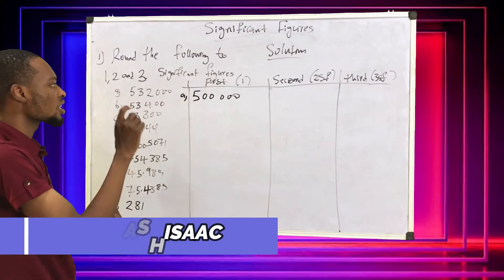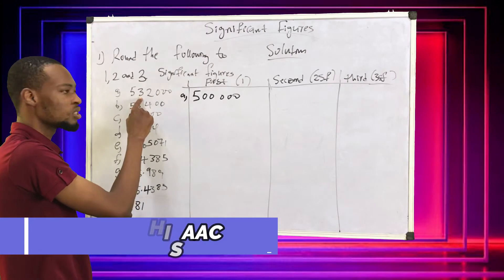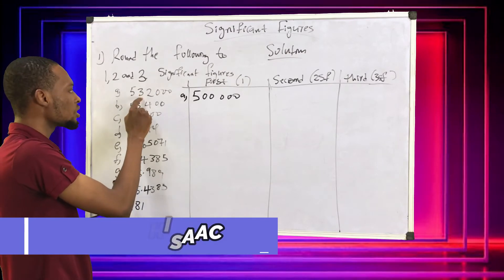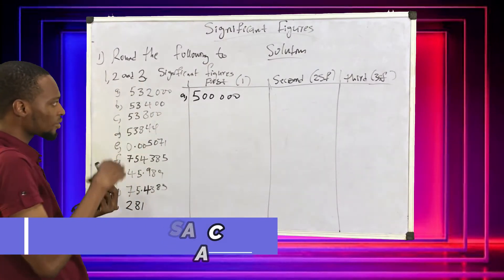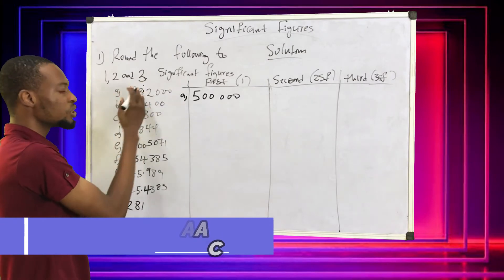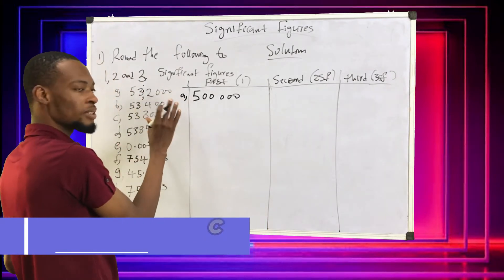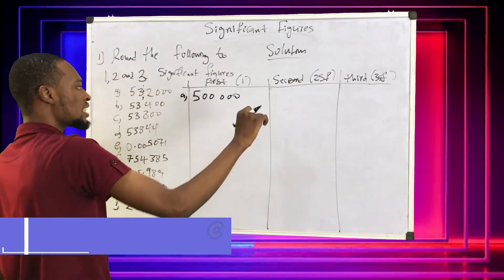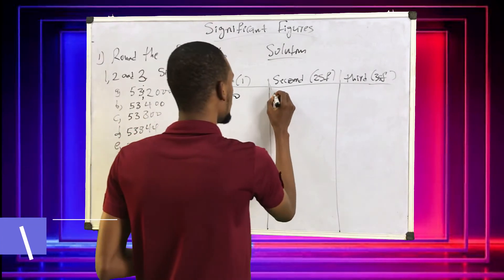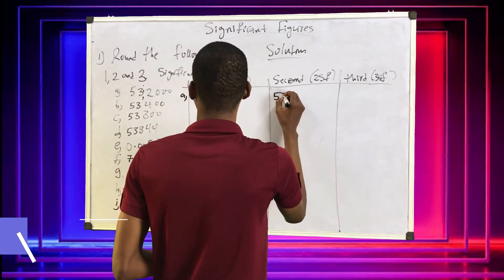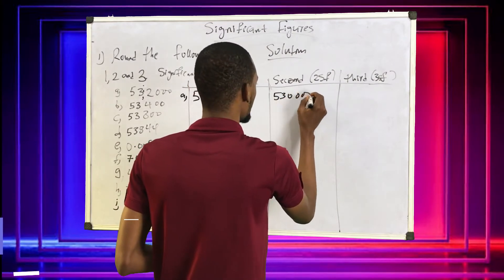To two significant figures: the digit after the first significant figure is 3, so 3 is the second significant figure. We need from here back; we don't need the rest. Since there is no decimal place, we have to add zeros — they are relevant. We now have 530000.